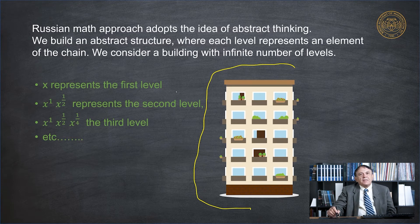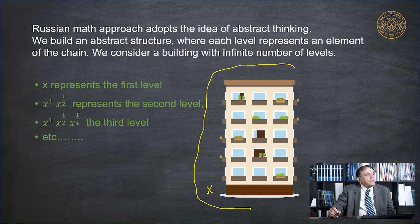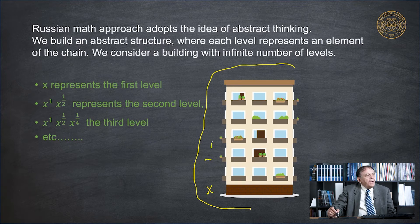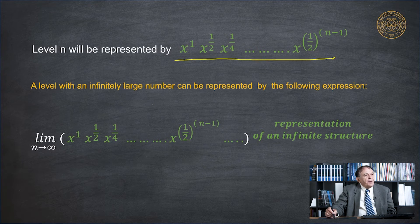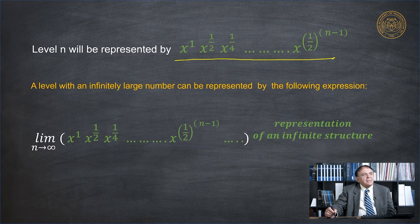We'll show how, with the use of the Russian Math Approach, you can solve this equation, and we'll see how simple it is. First of all, we need to build — as I said before — an abstract structure. It can be just a building with an infinite number of levels. We prescribe x to the first level, then the second level will be x multiplied by the square root of x, the third builds on the second, and we move up and up. Finally, we see this expression that characterizes our multi-level building with an infinite number of levels.